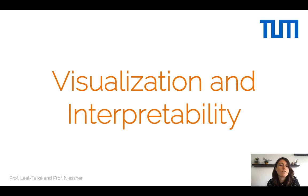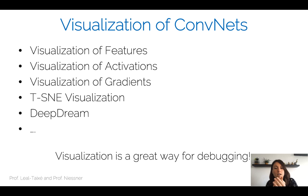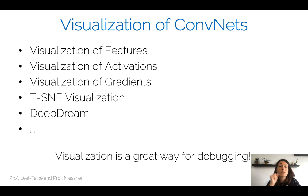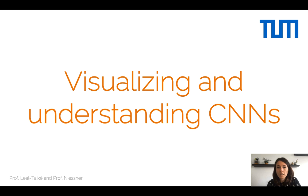Welcome to the lecture on Visualization and Interpretability. There are several ways to visualize CNNs, and all of these are a great way for debugging your CNN. You can visualize the features after training, the activations, the gradients, and certain visualizations like t-SNE to see whether your neural network is making accurate predictions. Often it is hard to see what is happening inside a CNN — some people say this is more like a black box — and visualization tools are one step forward towards understanding what is happening inside these CNNs.